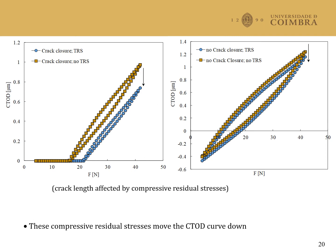Here we can observe the effect of thermal residual stresses on CTOD plots. There is a trend for the movement of CTOD curves downward in the presence of thermal residual stresses. In the presence of crack flanks contact, this produces an increase of crack closure phenomena and therefore a reduction of da/dN. Without the contact of crack flanks, the presence of thermal residual stresses does not affect the curve shape and therefore does not affect crack tip plastic deformation.